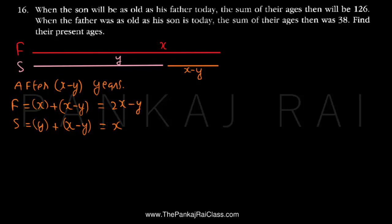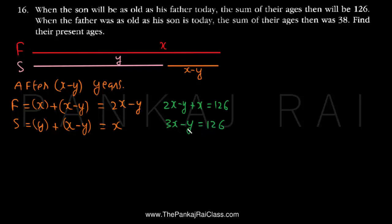We are given that at that future point the sum of their ages will be 126. So the sum is (2x minus y) plus x equals 126, giving us the equation: 3x minus y equals 126.